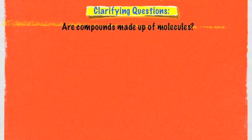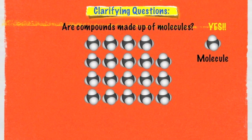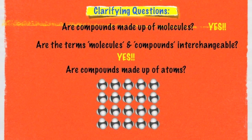Here are some clarifying questions about the similarities and differences between molecules and compounds. Are compounds made up of molecules? There's that compound from the previous page — if we remove the smallest component of it, yes, that's a molecule. So compounds definitely are made up of molecules. Are the terms molecules and compounds interchangeable? Yes, just like atoms and elements are — molecules and compounds can be used interchangeably. But remember, molecules are the smallest component of a compound that still has the same properties of that compound. Are compounds made up of atoms? Let's take a look at that.